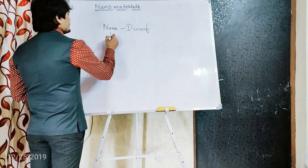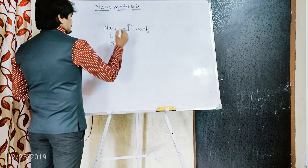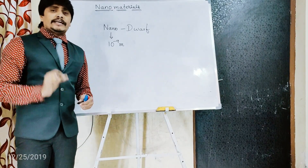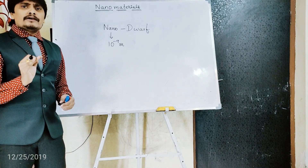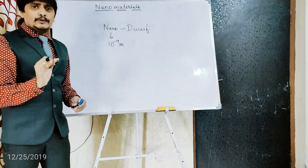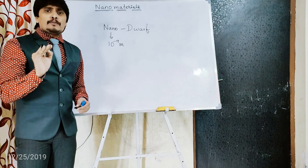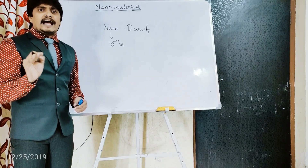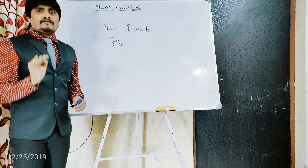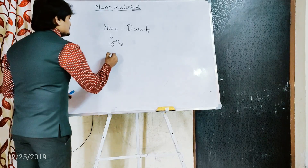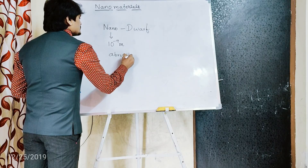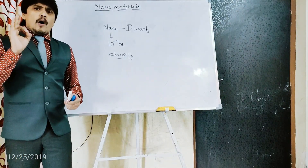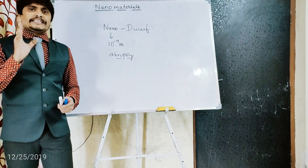The value of nano is 10 to the power of minus 9 meters. This is a very trifling value, but it can be considered a magical value or magical point, because the bulk properties of materials — such as mechanical, optical, electrical, catalytic, and thermal properties — change abruptly with entry into this domain.